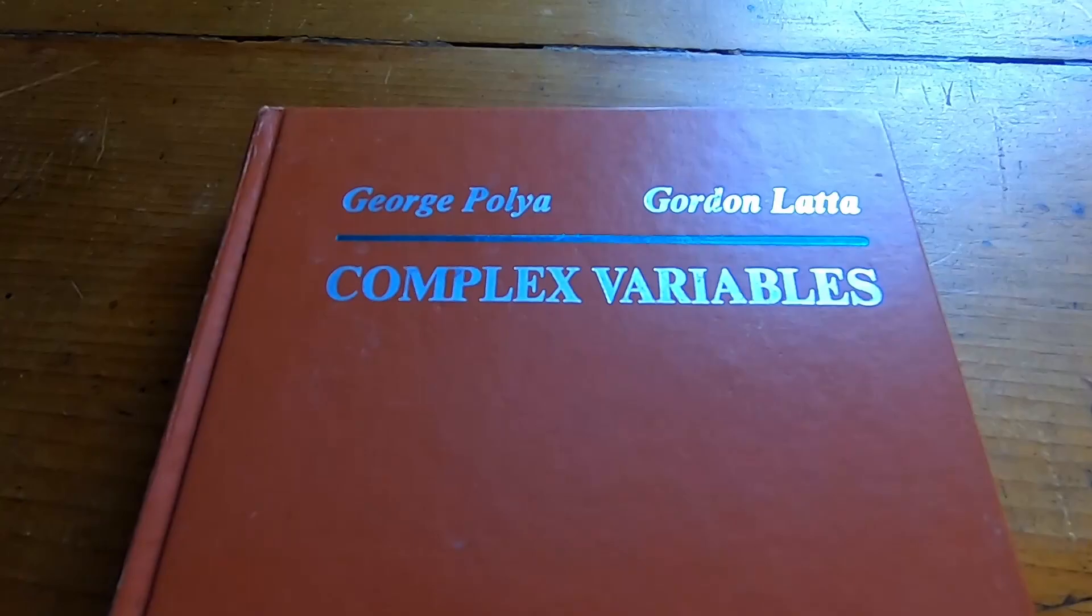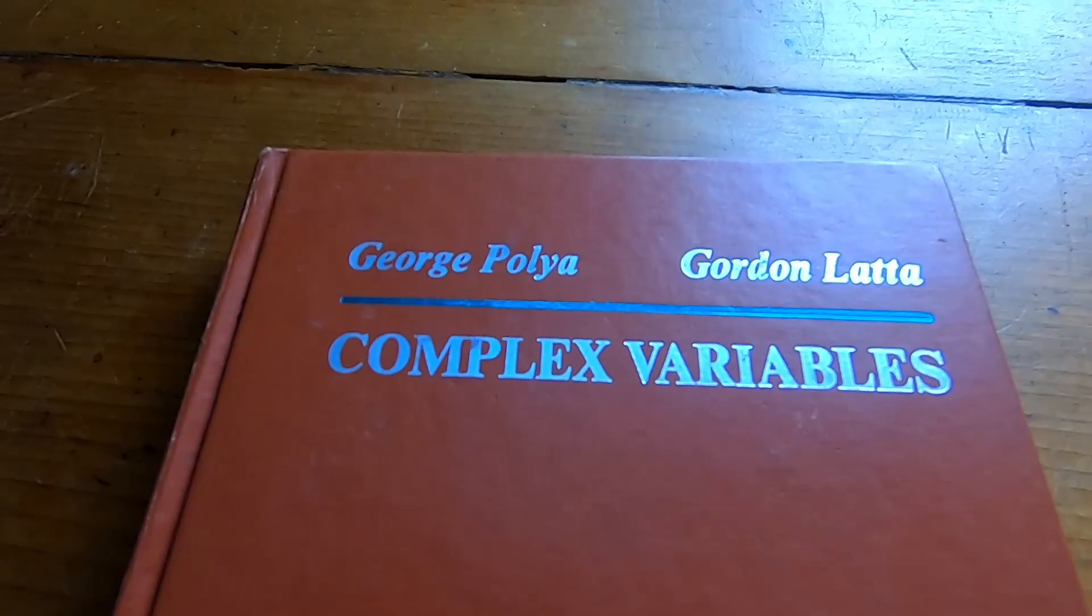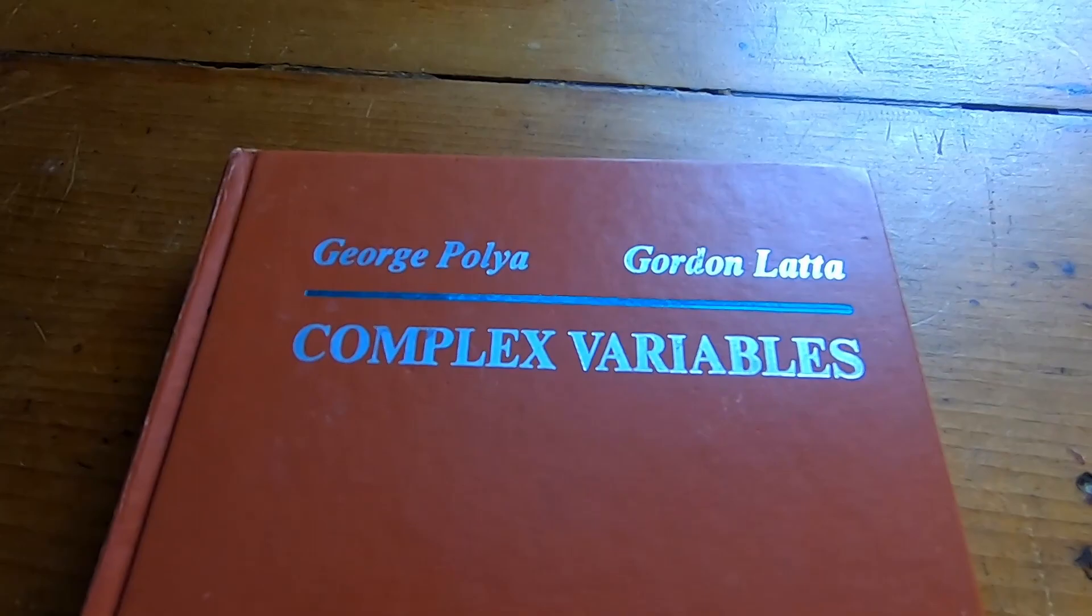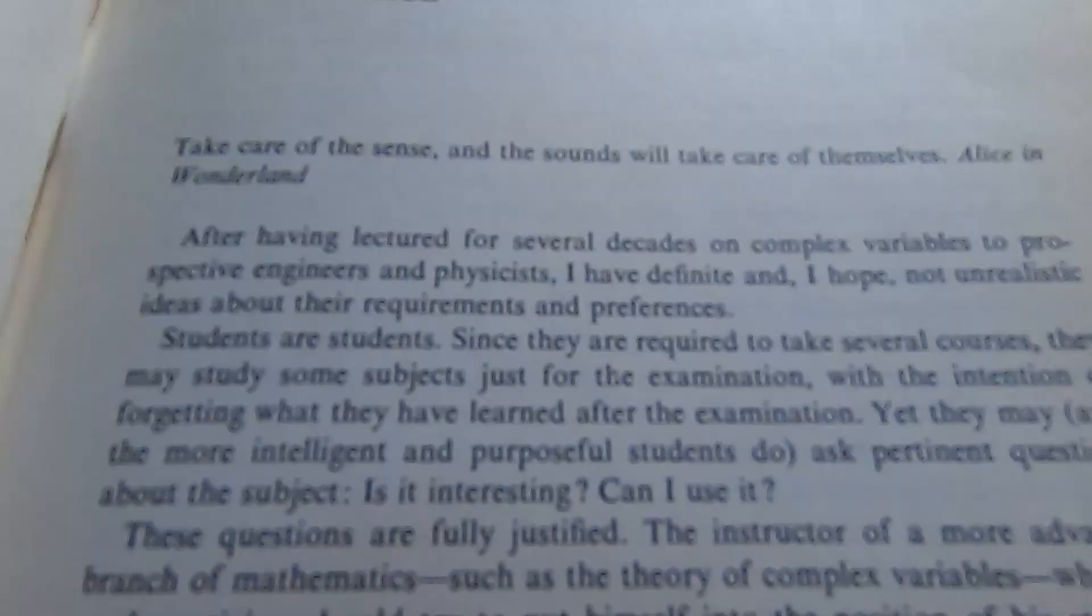In this video, I want to go over a very famous book written by a very famous mathematician of the past. This is the Pólya and Latta book, and that is George Pólya. Super famous mathematician, and this is his book, or their book, on complex variables. This is a really good book. Let's take a look inside this classic.